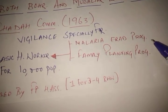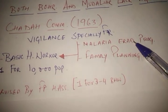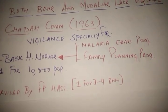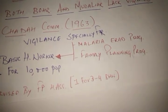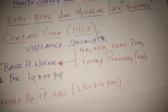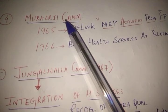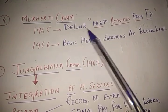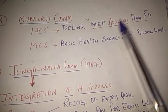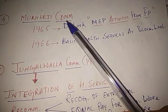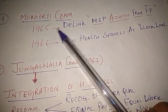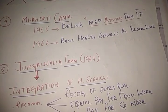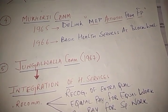In the Chadha Committee, both activities — malaria eradication and family planning — were going on together. To overcome that, the more advanced Mukherjee Committee came in 1965, and it basically tried to separate the activities of the Malaria Eradication Program from the Family Planning Program — to de-link the two activities.